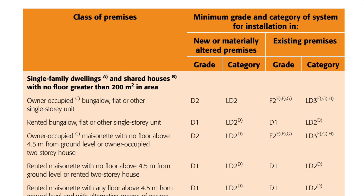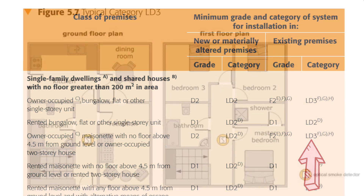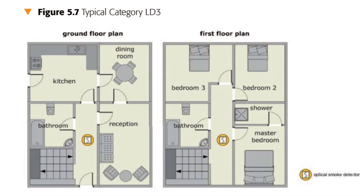Hopping over to the existing premises column, the requirement for the same type of property is a little different. We can see that it's only an F2 grade, which means it can be detectors powered only by batteries, and those batteries can be replaced by the occupier — which kind of makes sense because these can be added without tearing the house up for mains wiring. And the category has also taken a step down to LD3, which is the bare minimum system, with detector coverage in all circulation spaces that form part of the escape routes from the dwelling.